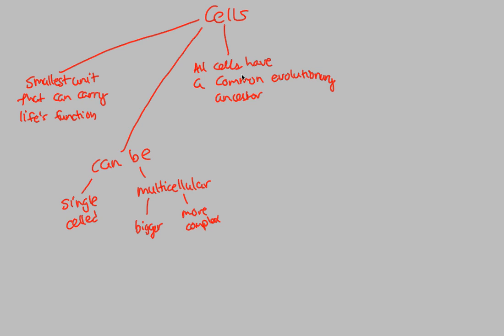Cells all came from one cell. One cell that was the first thing to show life's functions, to show the ability to live and be a living thing. There was one common evolutionary ancestor that gave rise to everything.